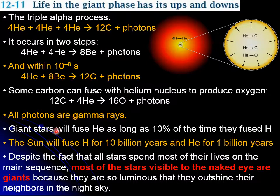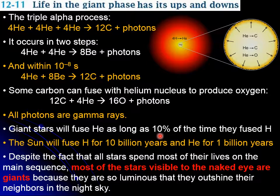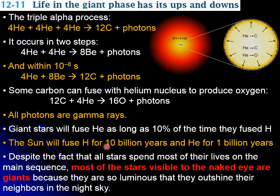The giant stars producing helium fusion will do so for a long time, but not as long as hydrogen fusion. Helium fuses for about 10 percent of the time that hydrogen fused. For instance, in our Sun, hydrogen will be fusing for 10 billion years, but helium only for about 1 billion years.